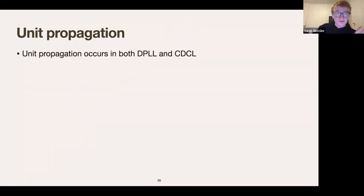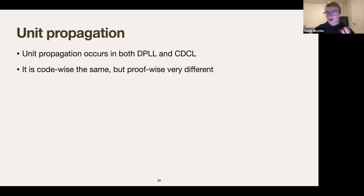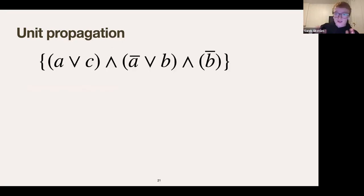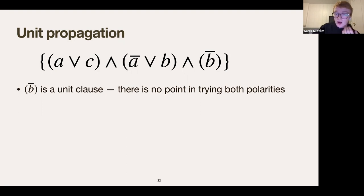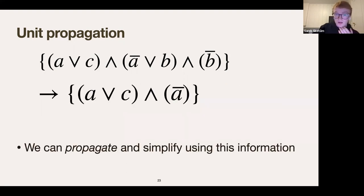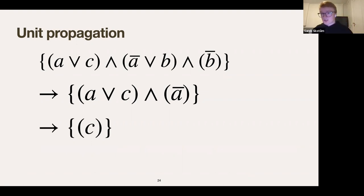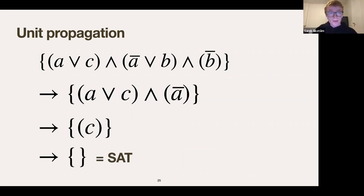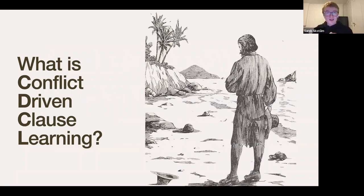The main idea of CDCL is that you learn from failures — you learn from conflicts so you don't repeat the same failure. Unit propagation occurs in both DPLL and CDCL. Here's a brief example: given a formula where `not b` is a unit clause, there's only one way to satisfy it, so we set b accordingly, simplify the formula, get a new unit clause, simplify again, and eventually reach the empty formula — satisfied. That's unit propagation.